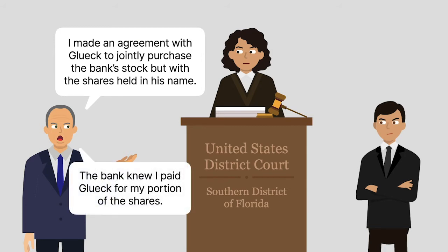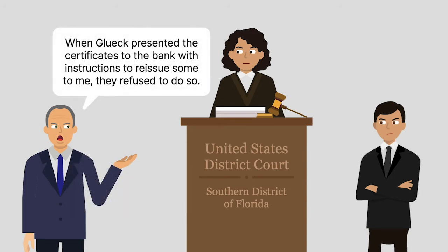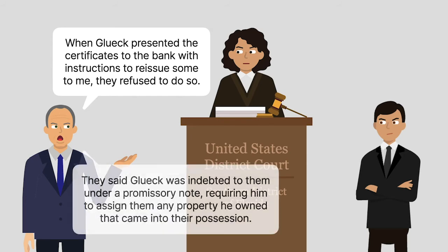The bank knew that Haas had paid Gluick for his portion of the shares. When Gluick presented the certificates to the bank with instructions to reissue some of them to Haas, the bank refused to do so, because Gluick was indebted to the bank under a promissory note that required him to assign to the bank any property he owned that came into the bank's possession.